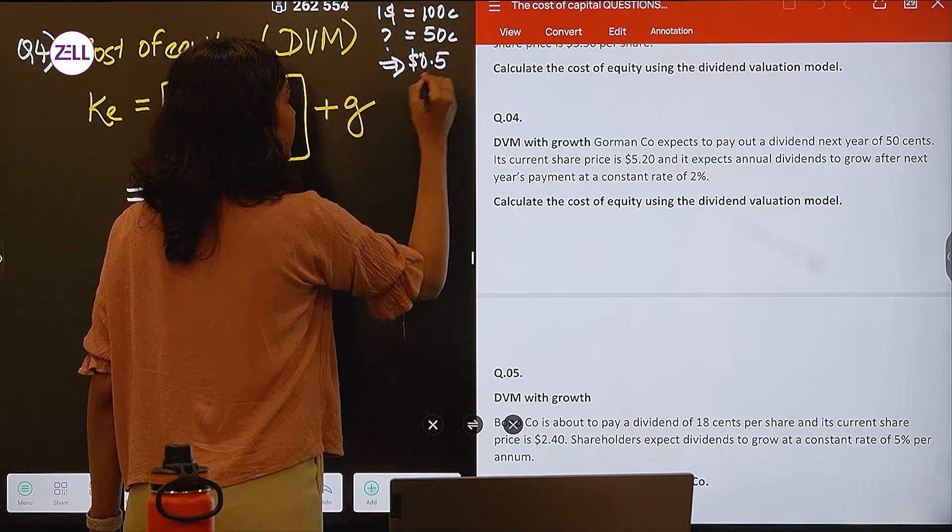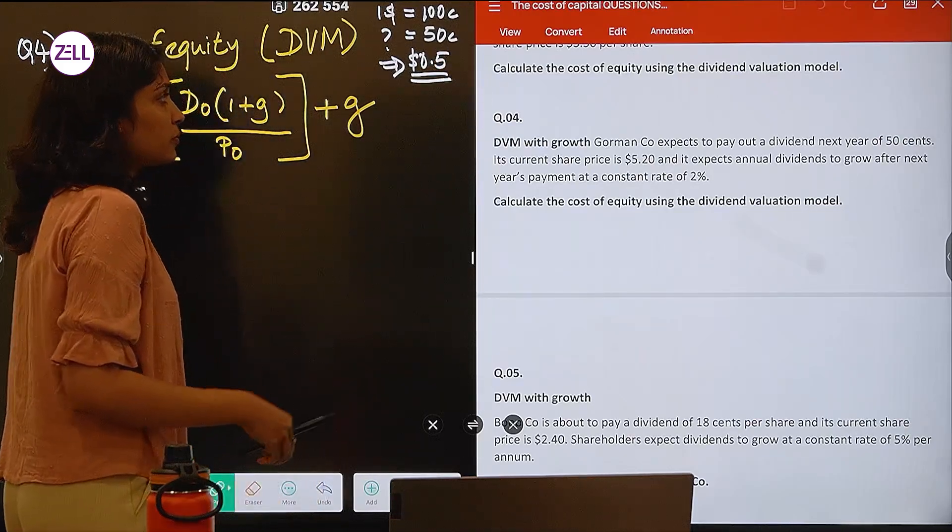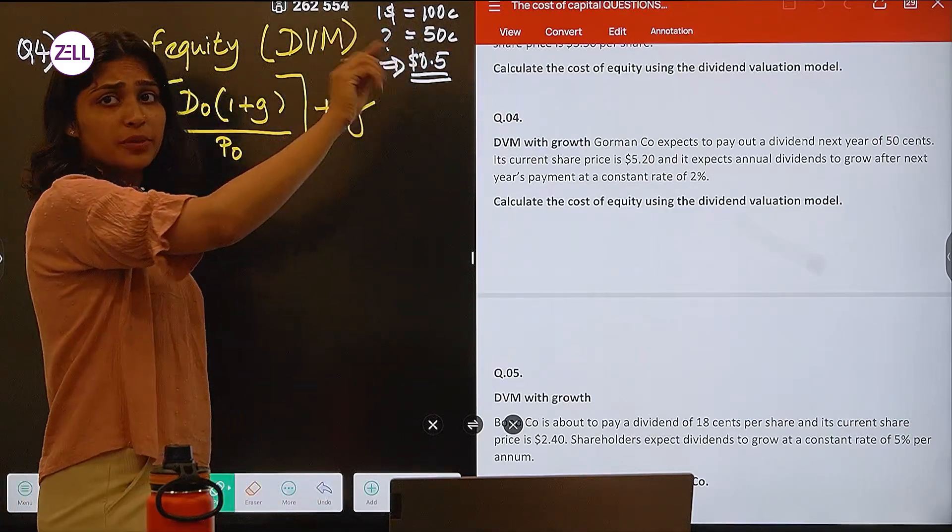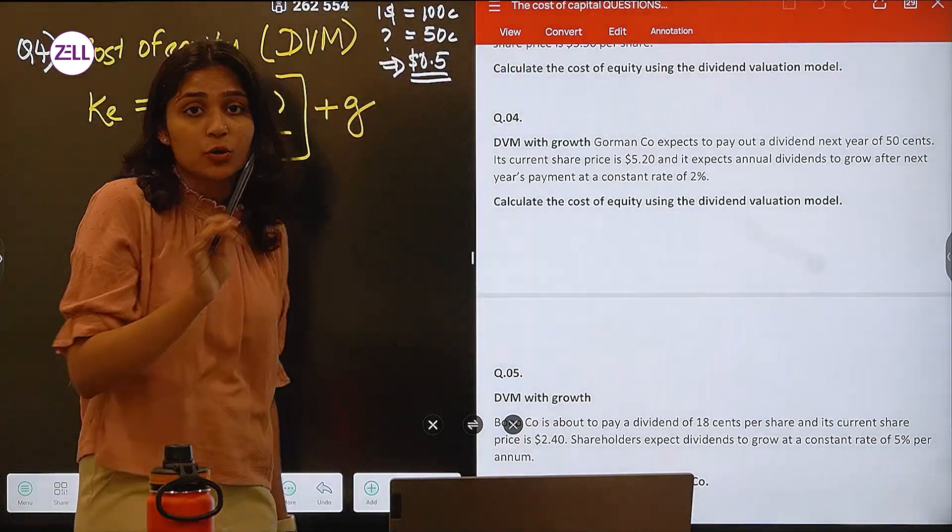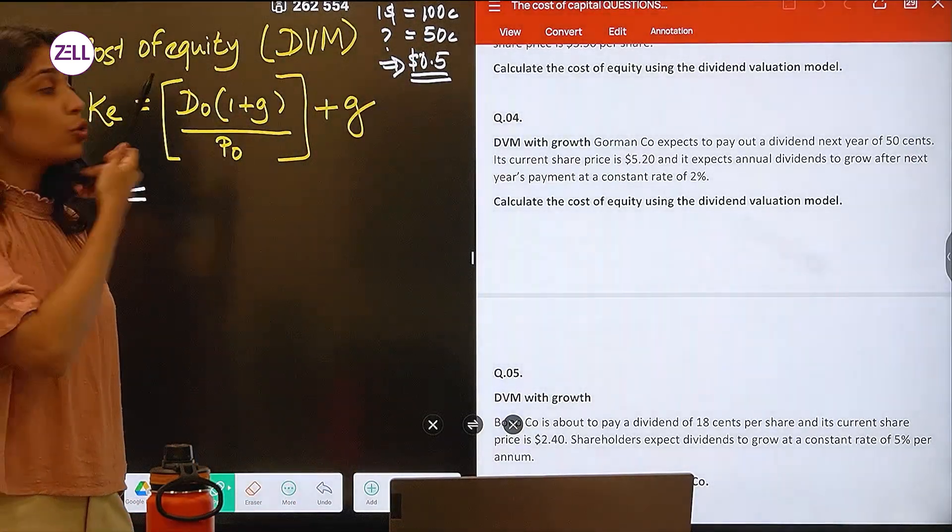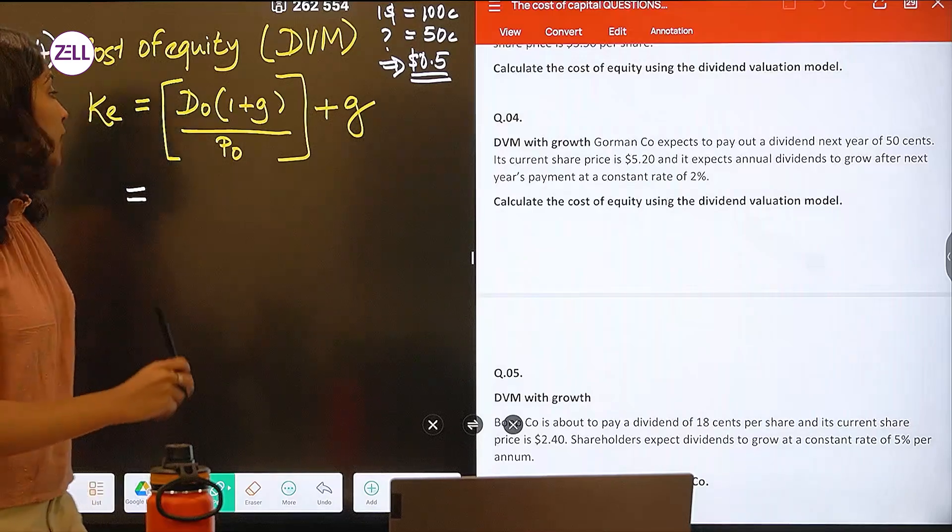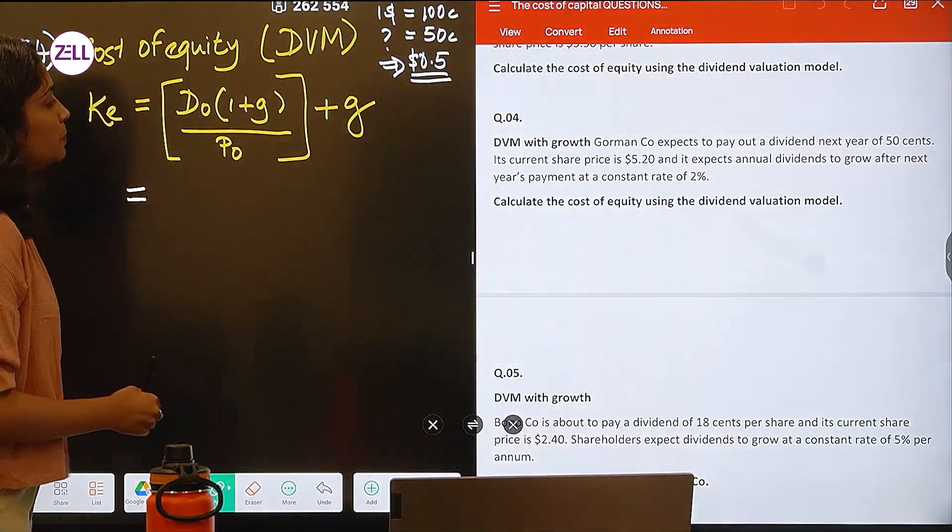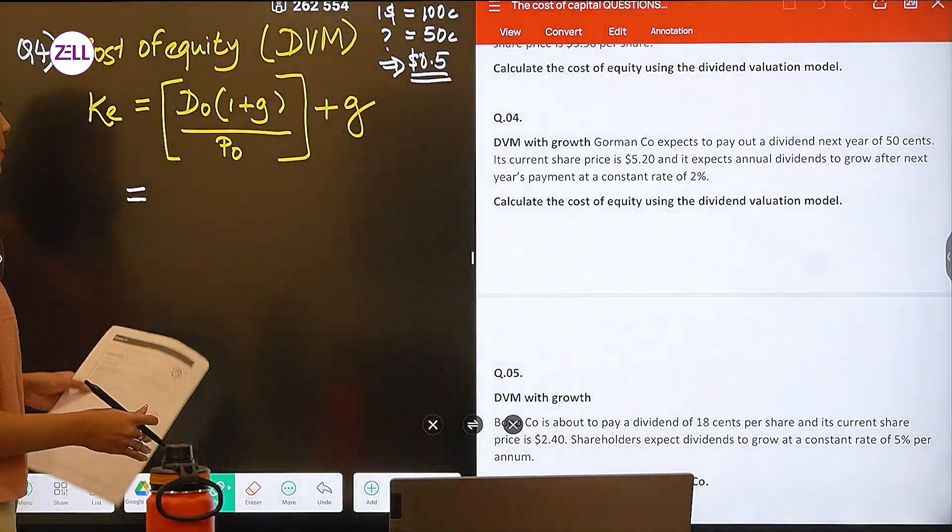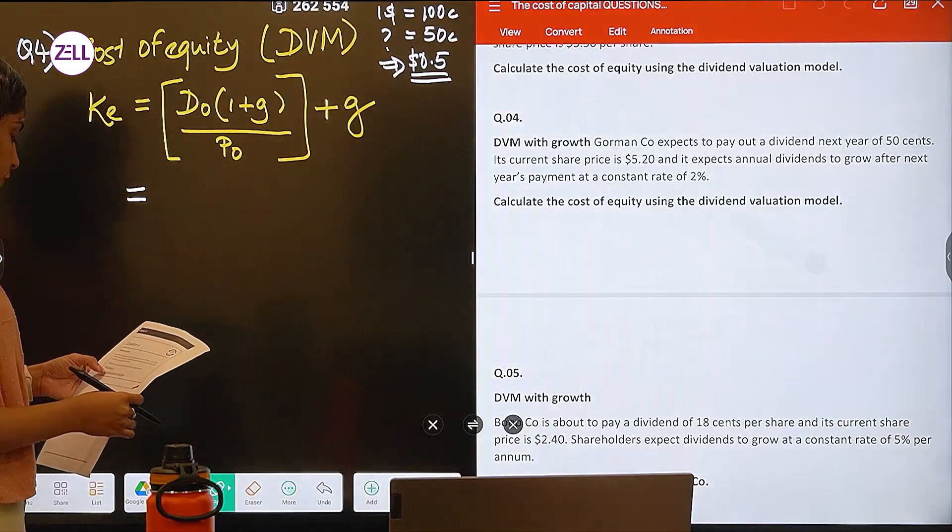It is 0.5 dollars. Now this is a fact. This is common sense to know that 1 dollar is equal to 100 cents, alright? There is no concept behind it. Okay. Now coming to this aspect over here. So what is my dividend? My dividend is 0.5 dollars.